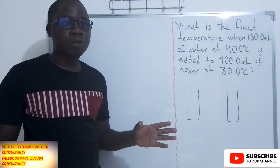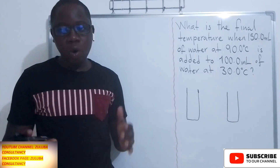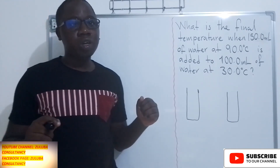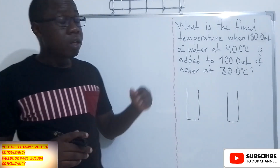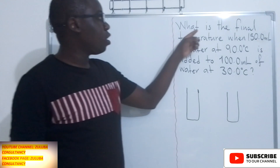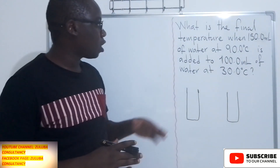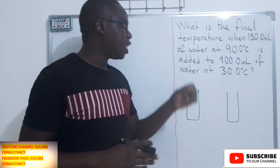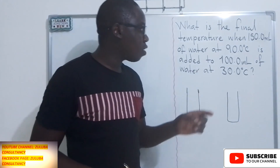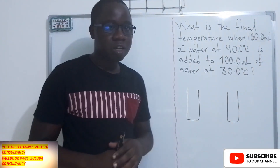Welcome back to Zuluwa Consultants. In this video, we want to learn how we can calculate the final temperature when two liquids are mixed. The question reads: what is the final temperature when 150 milliliters of water at 90 degrees Celsius is added to 100 milliliters of water at 30 degrees Celsius?